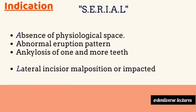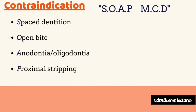If the lateral incisor is in malposition or impacted, serial extraction is also indicated. The mnemonic for contraindications is 'SOAP MCD': Space dentition, Open bite, Anodontia (complete absence of teeth), Oligodontia (absence of more than six teeth). Proximal stripping should be used as a treatment option for mild arch length tooth material discrepancy rather than serial extraction.